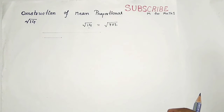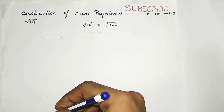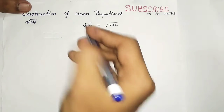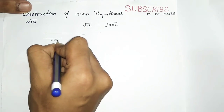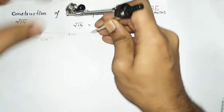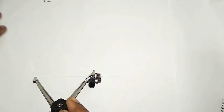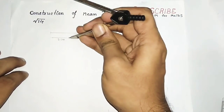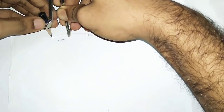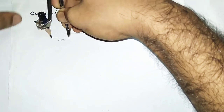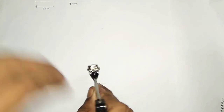Now you have to draw a line which is greater than the sum of these two, that means greater than 7 + 2 = 9. I am taking 10 cm here. From this bigger line, you have to cut a section of 7 cm first, and then cut out 2 cm. Taking the measurement of the 2 cm line, you draw the 2 cm portion from the left part of the line. This gives the total combined line.